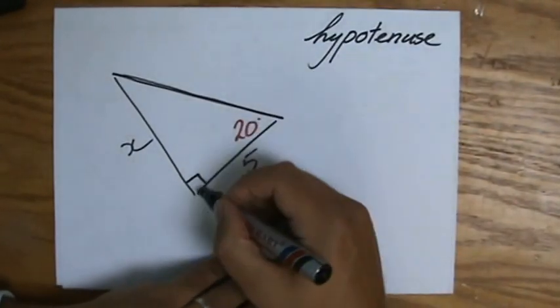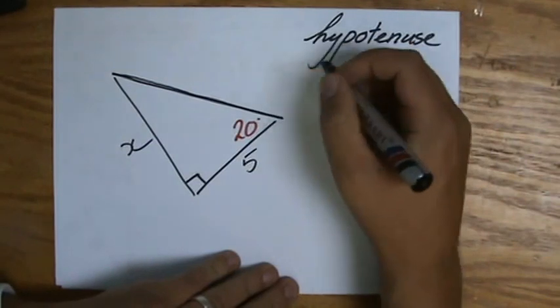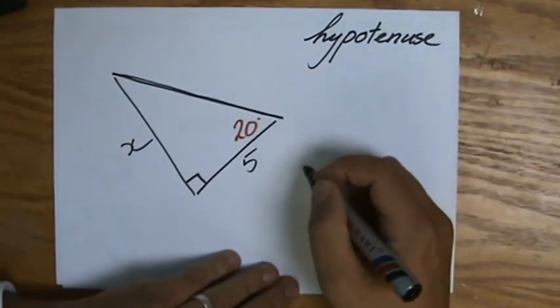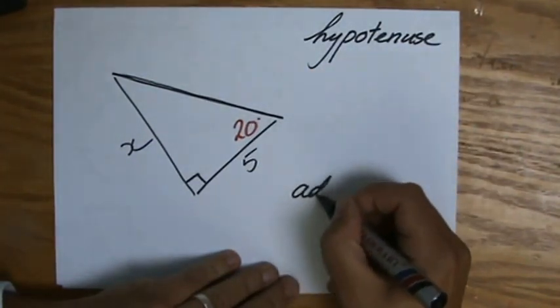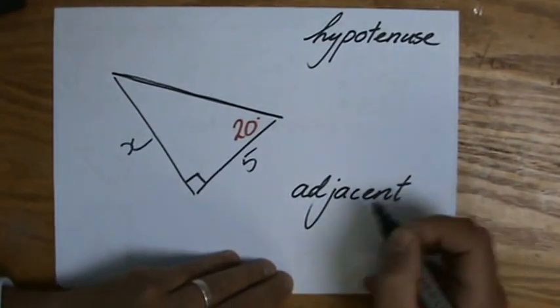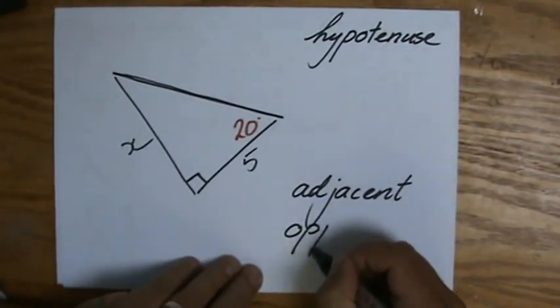But we have two other sides. And they are either, so it can change, the adjacent, or the opposite.